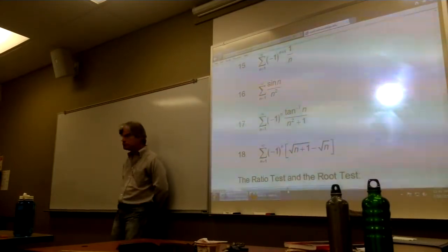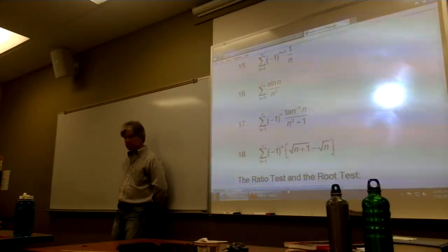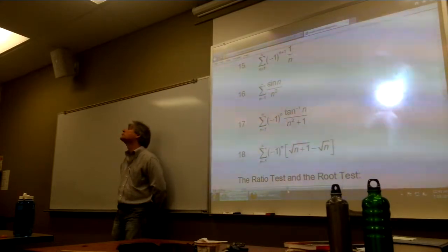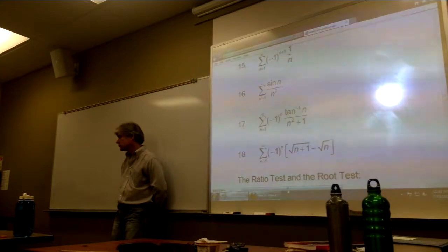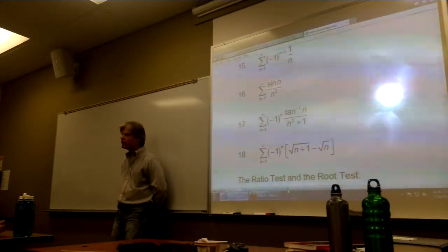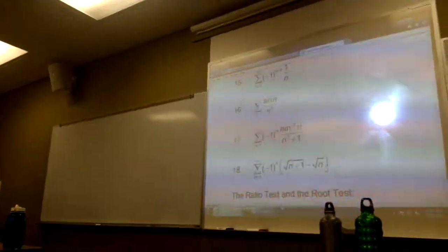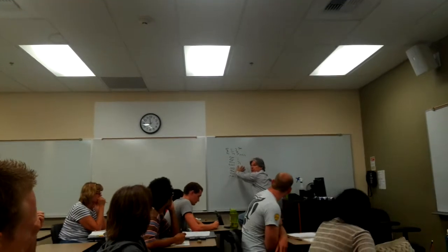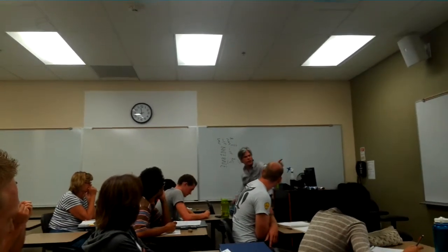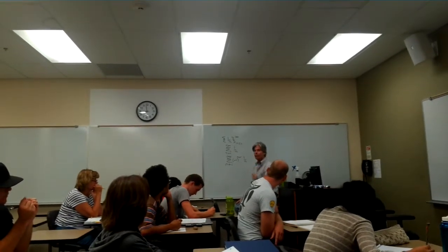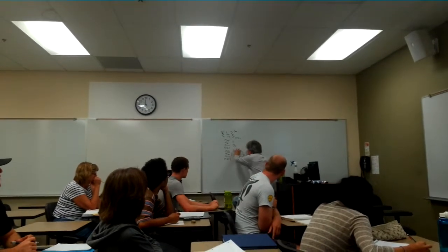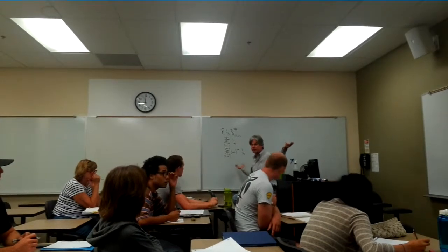If the sequence converges — meaning the positive component A sub n is decreasing and its limit is zero — then the alternating series converges as well. Since, as a sequence, A sub n plus 1 is less than or equal to A sub n (in this case 1 over n), and since the limit equals zero, then by the alternating series test this particular series converges.